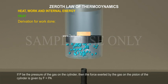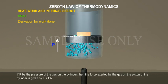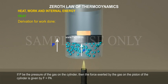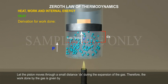If P be the pressure of the gas on the cylinder, then the force exerted by the gas on the piston of the cylinder is given by F is equal to PA. Let the piston moves through a small distance dx during the expansion of the gas.